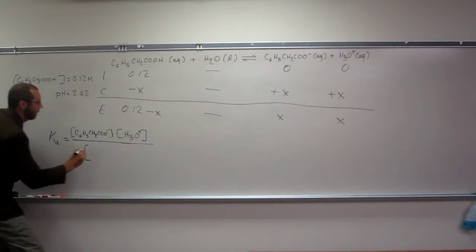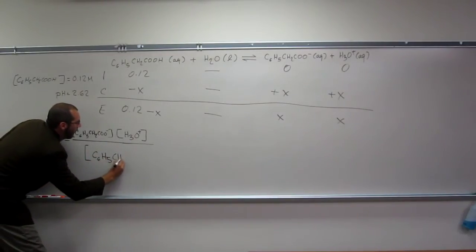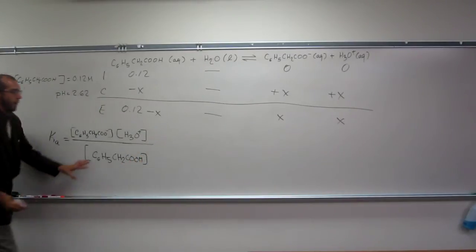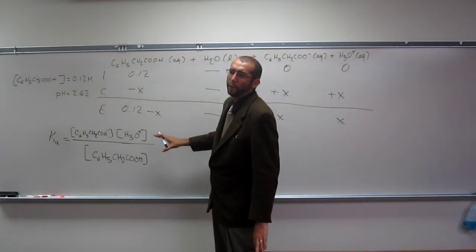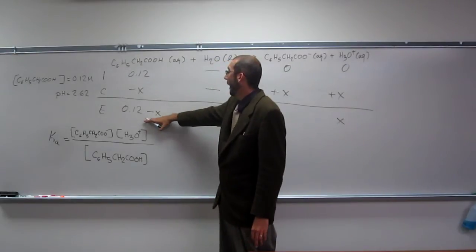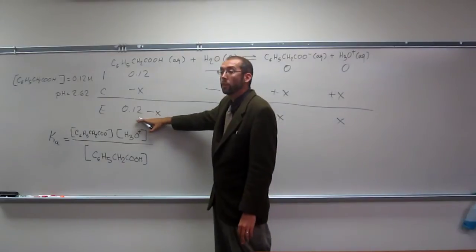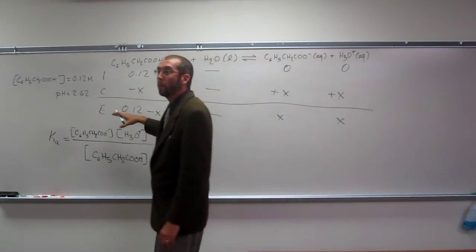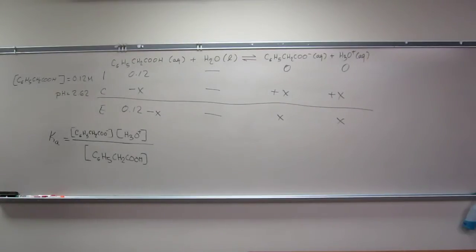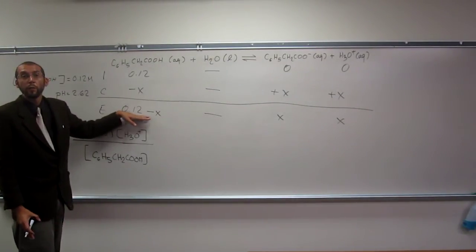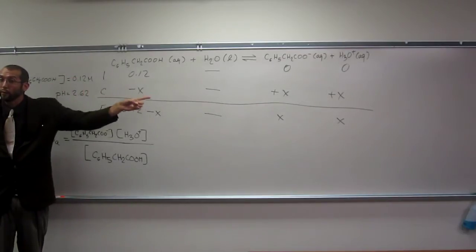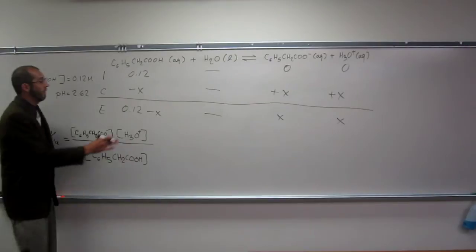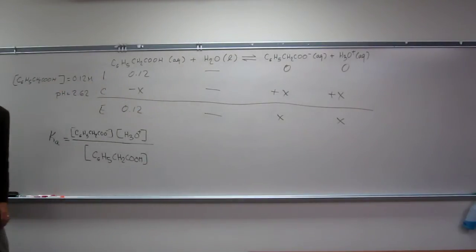And then down here, what are we going to have? So, what do we know about this? Normally, we would have to use the quadratic formula here. But we're going to invoke the 5% rule. So, instead of having 0.12 minus X, because we know this is a very weak acid, so Ka is not going to go that way for any appreciable extent. We can effectively erase that like that. That's going to be our equilibrium concentration.